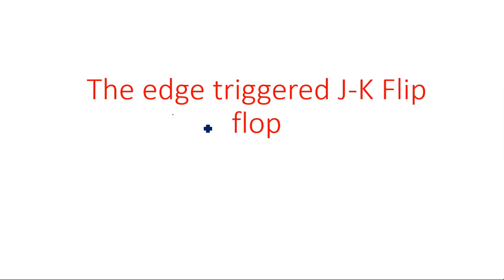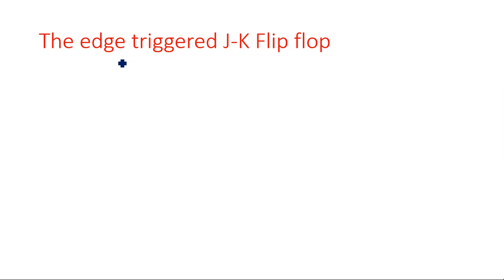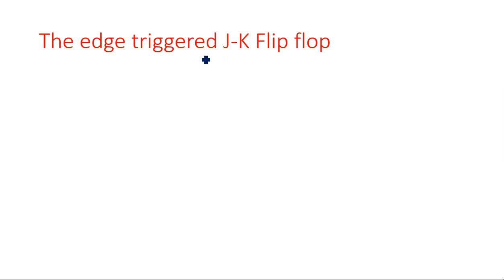In this video I'm going to explain about the edge triggered JK flip-flop. J and K stands for Johnson and Kelby, which has an advantage compared to the SR flip-flop. In SR flip-flop the main drawback was when S is equal to 1 and R equal to 1, the output is an indeterminate state because both Q and Q-bar become 1. In order to avoid that, we are going to add one more feedback from the output to the input controlling NAND gates.